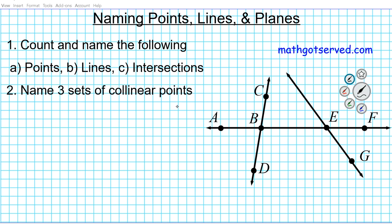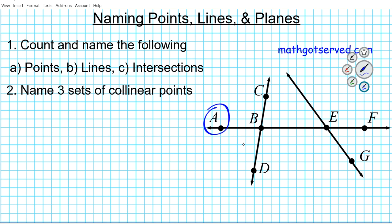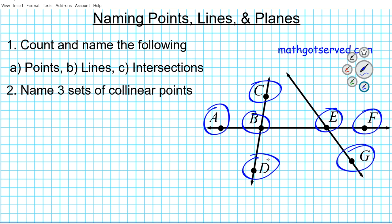Now let's look at this multi-part practice problem. For number one A, we want to count and name all the points. Remember, a point is just a location or a dot associated with a capital letter. So how many dots do we have here? We have one, two, three, four, five, six, seven. There are seven points in this diagram.